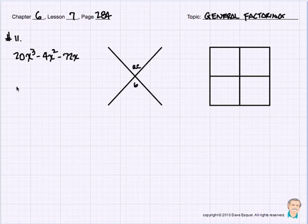Let's begin with number 11, 20x cubed minus 4x squared minus 72x. Well, we've never had a cube in our factoring. We've been doing quadratics. So remember one of the premises we had, one of the rules we had before we started factoring is we need to make sure we take something out of the polynomial if we can.